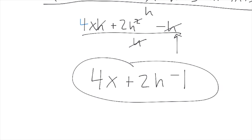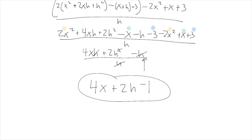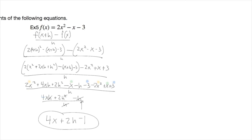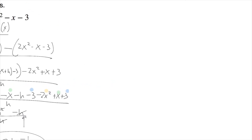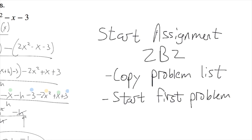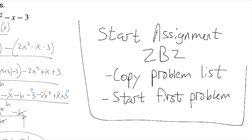So 4x + 2h − 1 is the difference quotient for that function. Now I'd like you to start assignment 2b2 — copy the problem list and start the first problem — and I will see you in class.